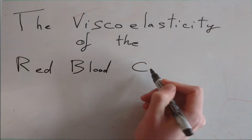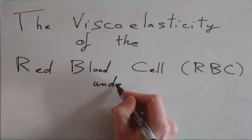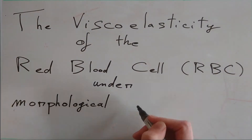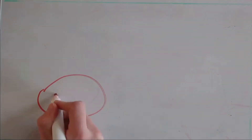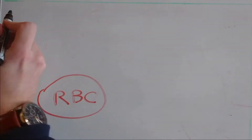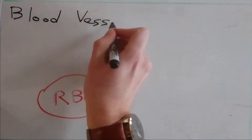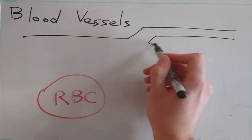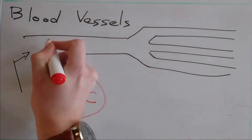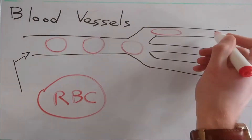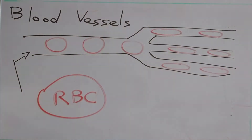The viscoelasticity of the red blood cell and their morphological change. The red blood cell is the blood's oxygen carrier. To transport it through some capillaries, the cell must be flexible to flow through the constricted regions.